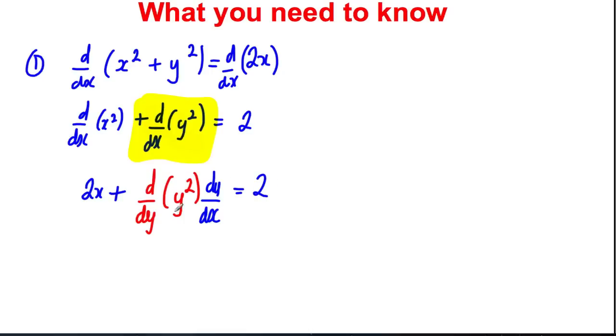Now we actually differentiate y squared with respect to y. So 2x plus 2y dy dx is equal to 2, and you could rearrange from that point and make dy by dx the subject. You might say that dy by dx is therefore 2 minus 2x all over 2y, which you might simplify to 1 minus x over y.